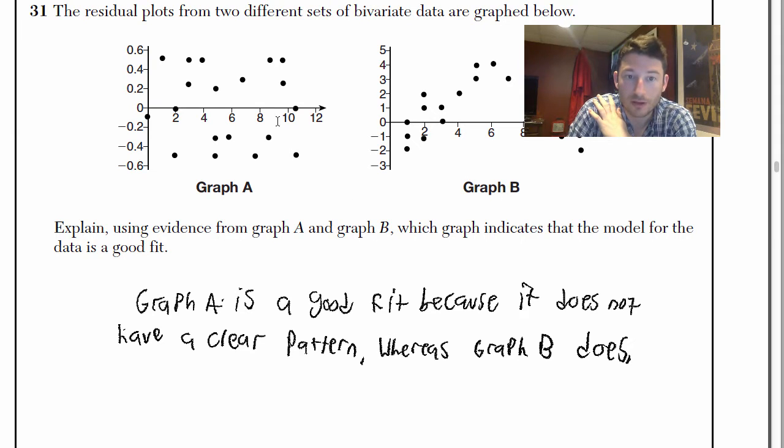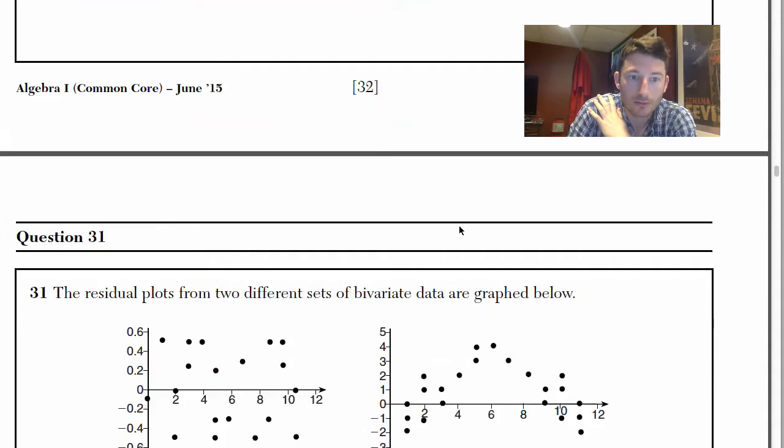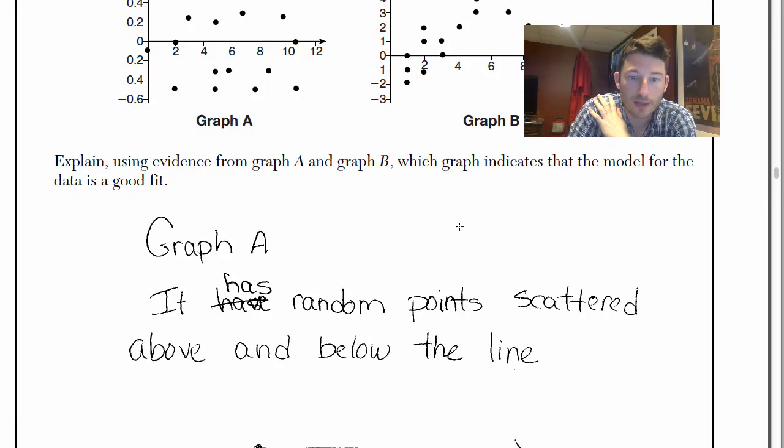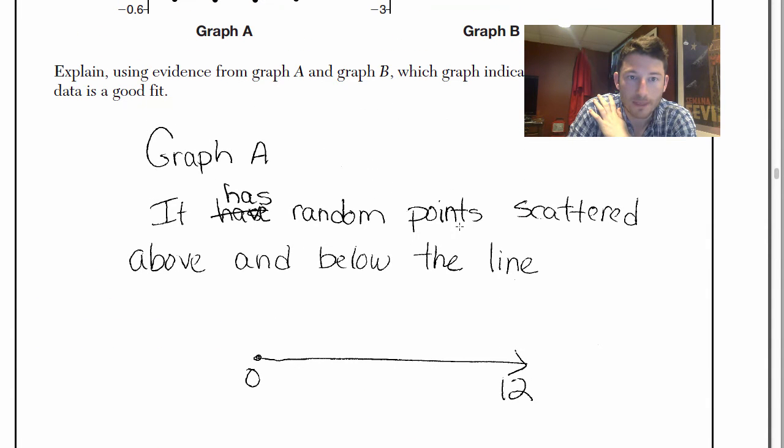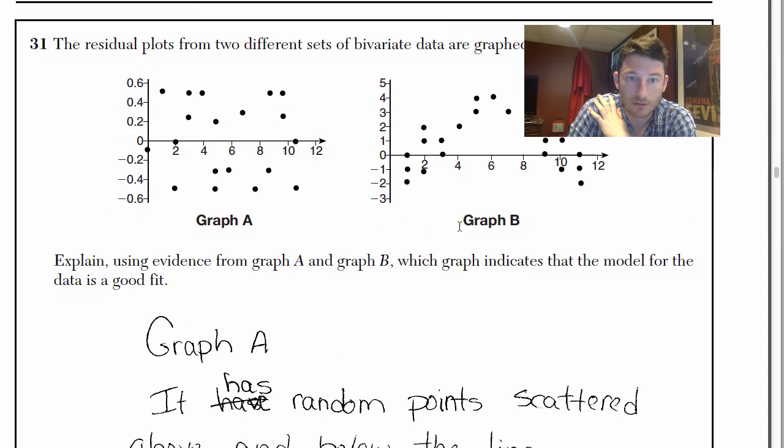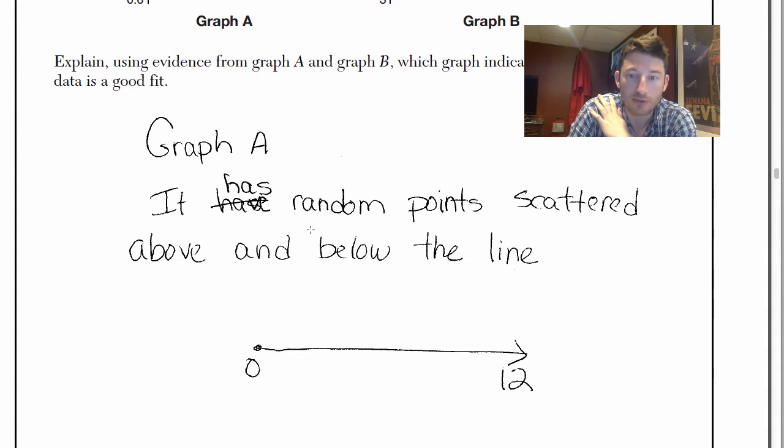So apparently saying that this does not have a clear pattern lets you know it's a better model for a good fit. Number 31, here's one that has a complete and correct response. So let's see, Graph A has random points scattered above and below the line from 0 to 12.